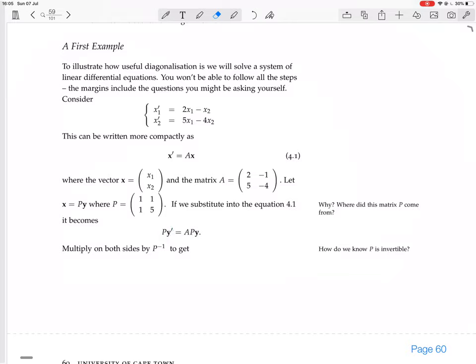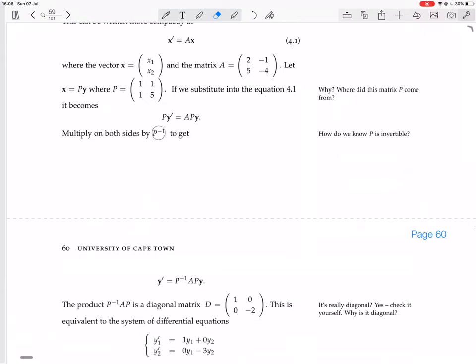If we substitute into the equation 4.1, substitute in Py where we see x, you get Py dash equals APy. Py dash, because P is just a matrix of constants. It works the same as when you differentiate a constant times a function, you just have the constant times the derivative of the function. Now we multiply on both sides by the inverse of P. Question, how do we know P is invertible? The determinant of this is not zero, or another way of saying it is the columns are linearly independent. Multiply on both sides by the inverse of P to get y dash equals P inverse AP.